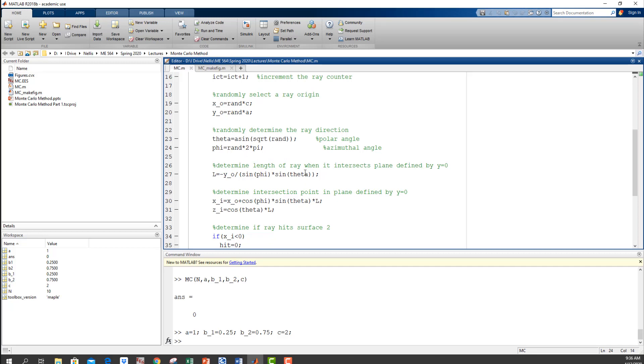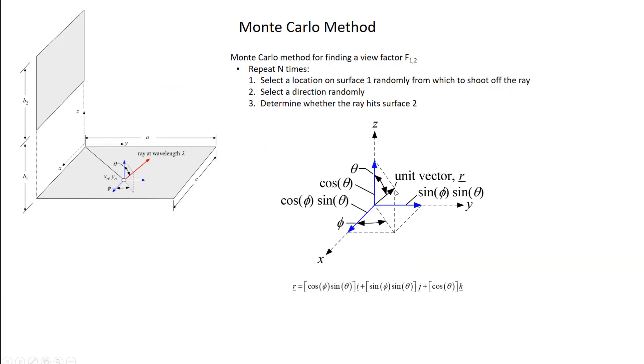So now I have my direction, so that's good. And the next thing I have to do now is keep track of where the ray goes. And this can be the hardest part of the problem depending on the geometry. I think the easiest way to do this is to recognize that when I shoot this ray off and choose a direction, I've basically defined a unit vector. I've defined a unit vector, I've given it an origin, and I've given it a direction.